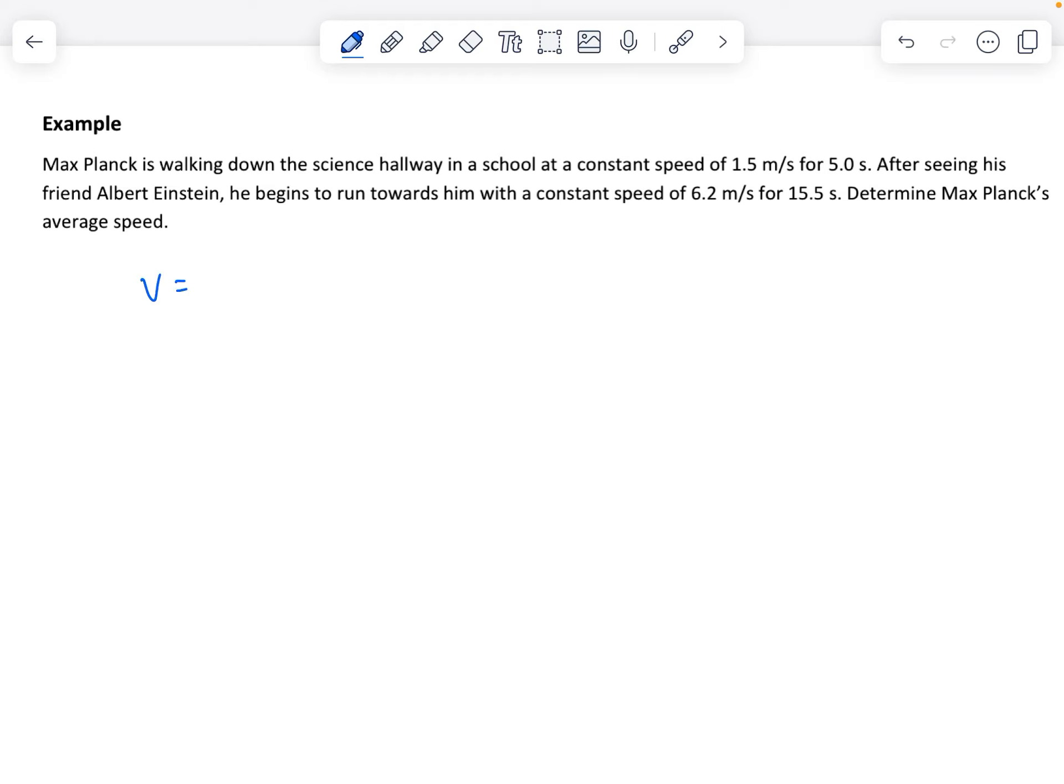So we know that speed is the change in distance over the change in time. Now there are two instances here. We've got the first instance where the speed is 1.5 meters per second and the time is 5.0 seconds. So rearranging our formula I could find the distance traveled - the change in distance equals the speed times the change in time.